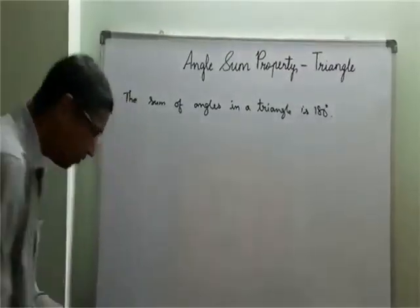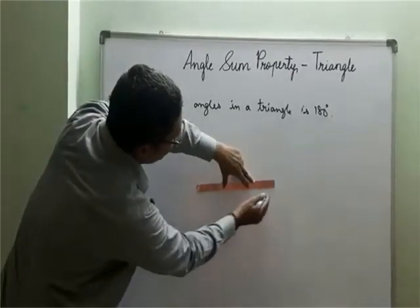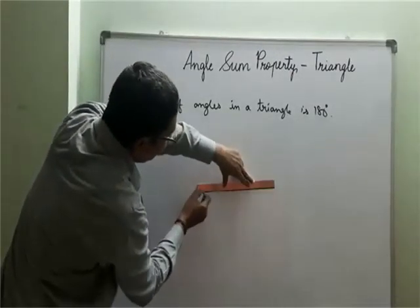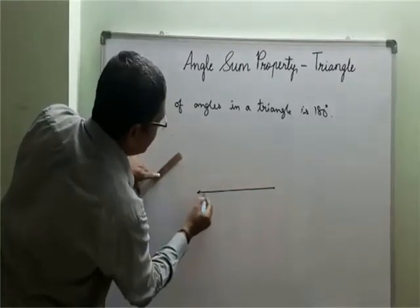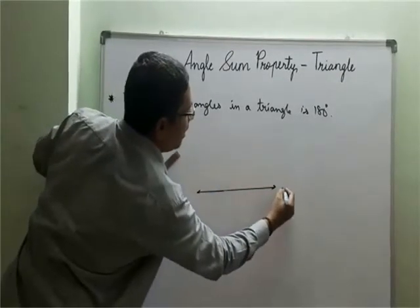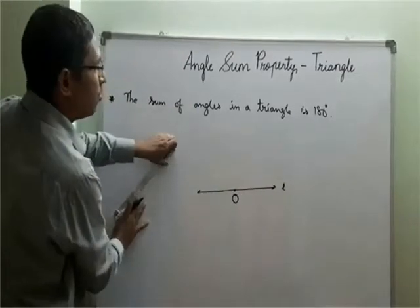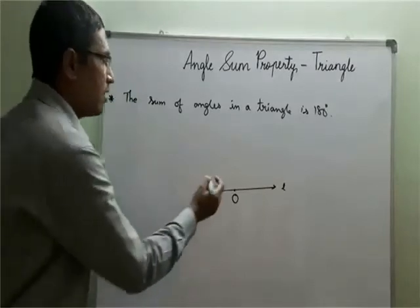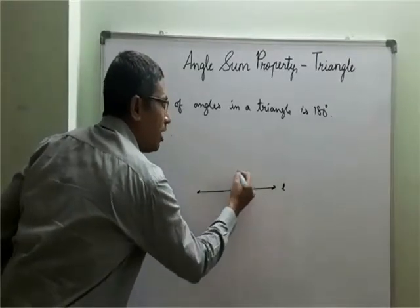Now let us see how to prove the sum of these three angles is 180 degrees. So for that children, first I'll draw a straight line here. Using a scale, draw a straight line like this. So this is a straight line, mark it as L and somewhere here I'll mark a point O.